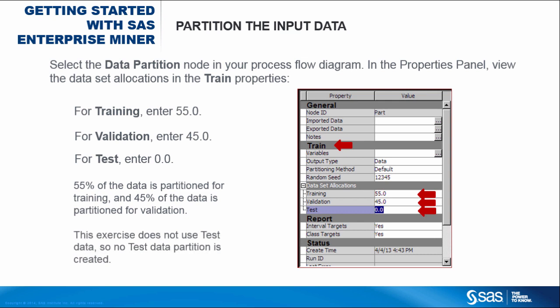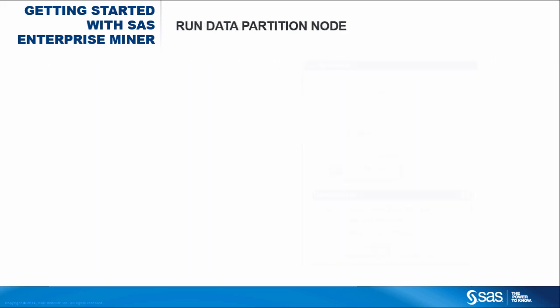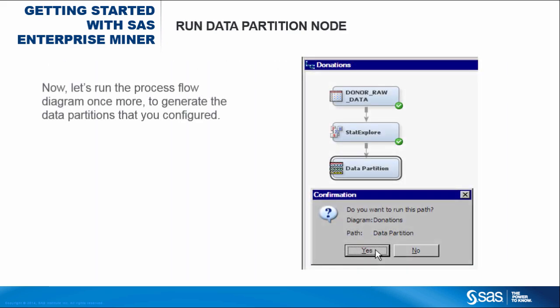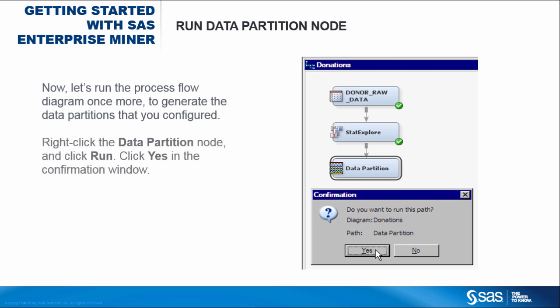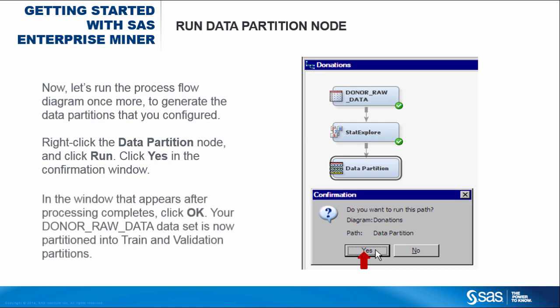This exercise does not use test data, so no test data partition is created. Let's run the Process Flow diagram once more to generate the data partitions that you configured. Right-click the Data Partition node and click Run. Click Yes in the Confirmation window. In the window that appears after processing completes, click OK. Your Donor Raw Data data set is now partitioned into Train and Validation partitions.